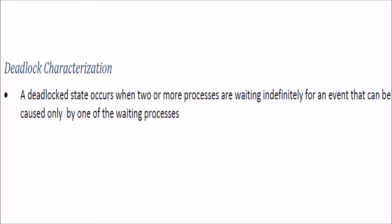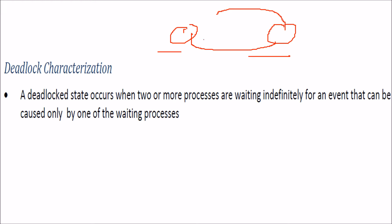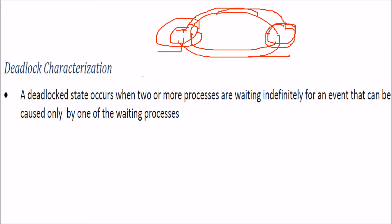How do we characterize a deadlock? When would you say that a deadlock has occurred? When two or more processes are waiting indefinitely for any event that can only be caused by one of these waiting processes — this process is waiting, that process is waiting, and both are waiting for the other to do something. But both are waiting, so nothing starts. This is deadlock characterization.